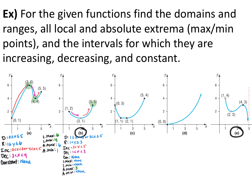For range on graph B, this point at (3,1) doesn't exist, but everything infinitely above it does, so we don't include 1. We want to go all the way up to and include 3, so the range is 1 < y ≤ 3. For increasing intervals, it's increasing to the right of the hole: 3 < x < 5. For decreasing, it's 1 < x < 3.